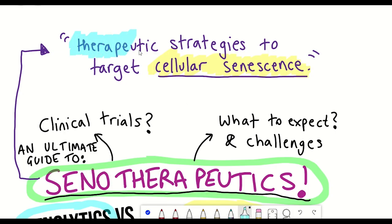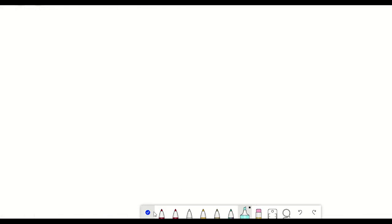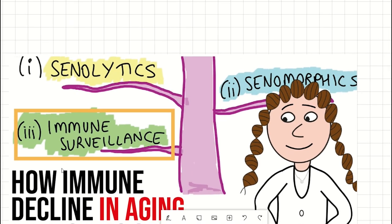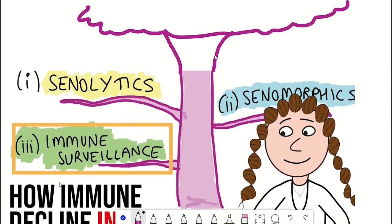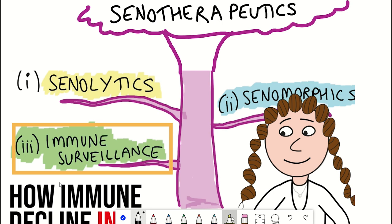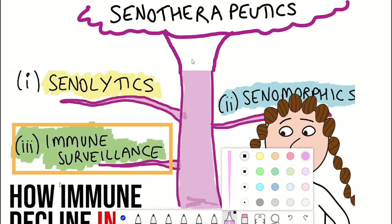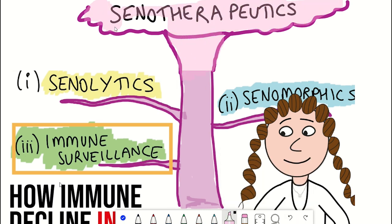Therefore, there is interest in understanding the action and impact of different drugs that can target cellular senescence, known as senotherapeutics. We spoke about this recently, but basically you can split senotherapeutics into three different categories.